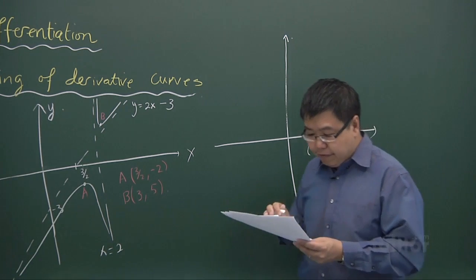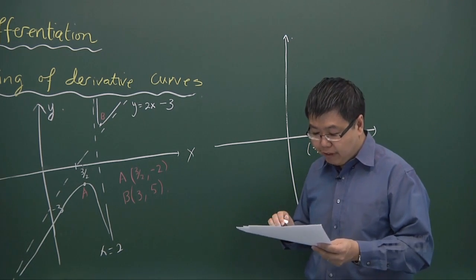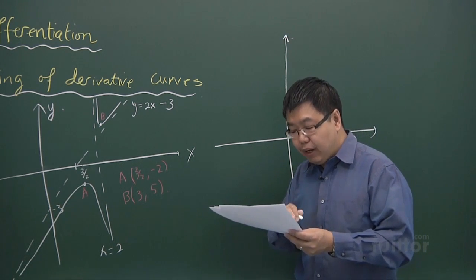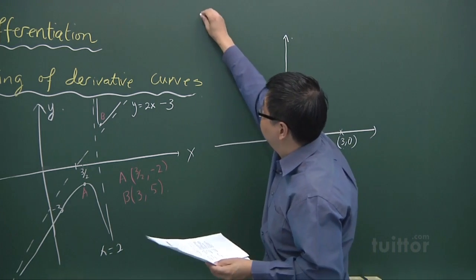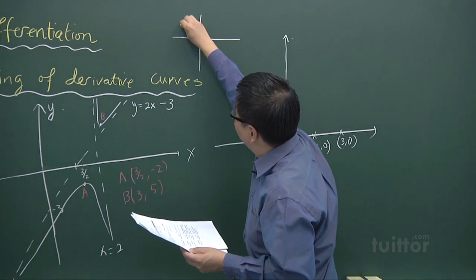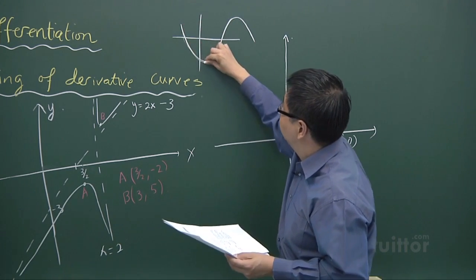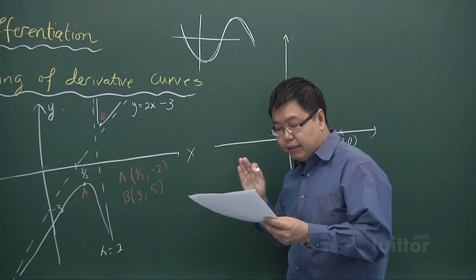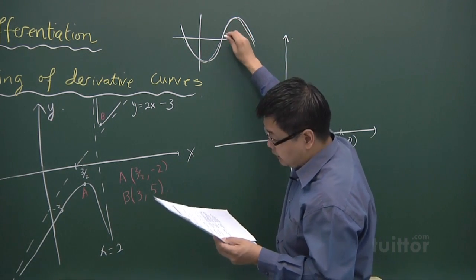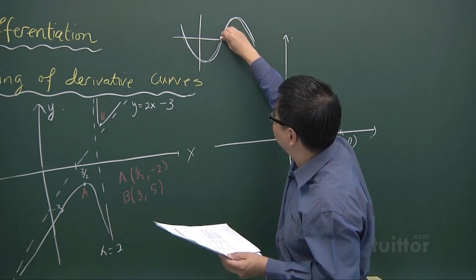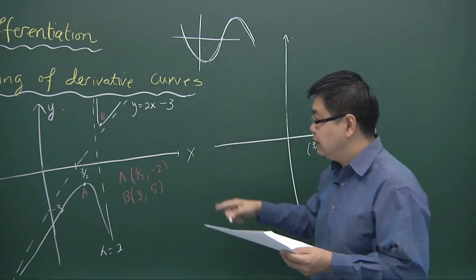The second thing says that when f(x) changes in curvature from concave upwards to concave downwards, then it will have a stationary point at y equals f'(x). For example, if a curve goes from concave upwards to concave downwards, the point where that change occurs will become a stationary point for the f'(x) graph. In this case, we do not have such a scenario.